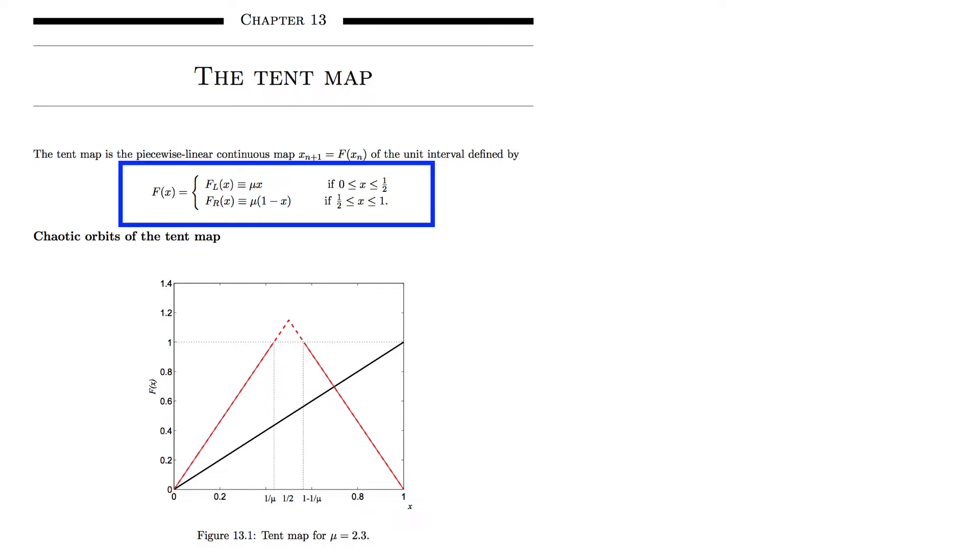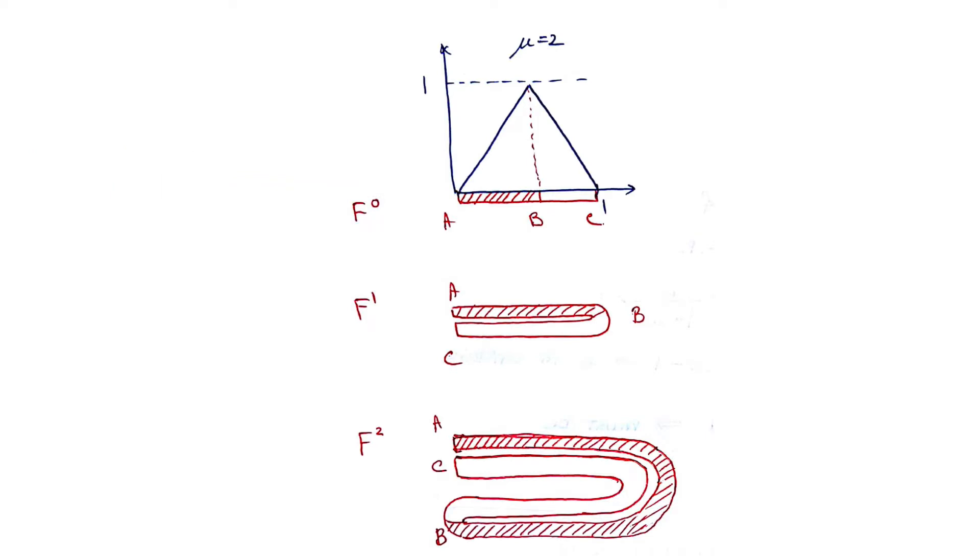Remember that the tent map is this map that resembles the logistic map. It depends on the parameter mu, so when mu is equal to 2, we call this the full height tent map. The nice thing about the full height tent map is that all the points in 01 are part of the invariant set, so the map always sends points in the interval to itself.